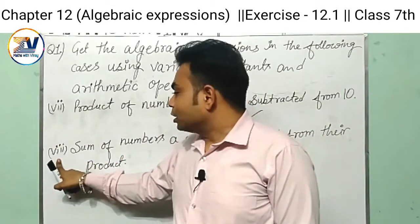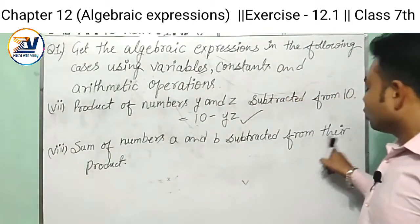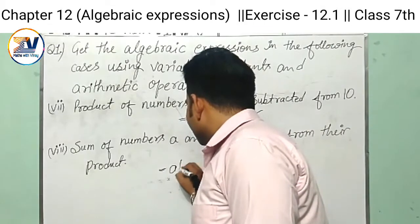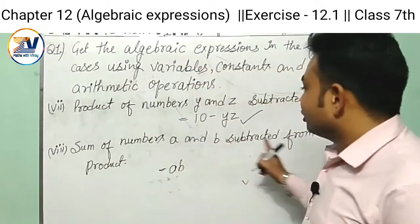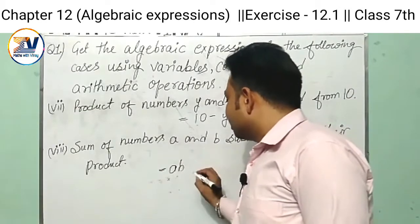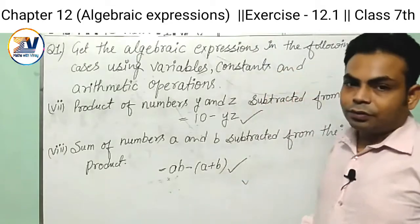Now we go to the last one. This is the last part, the eighth part: the sum of numbers a and b subtracted from their product. So firstly we find the product of a and b, there is ab, and subtract the sum of numbers a and b. So ab minus the sum of a and b, ab minus a plus b. This is our expression of the last one.